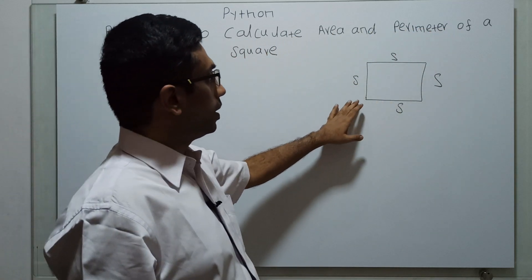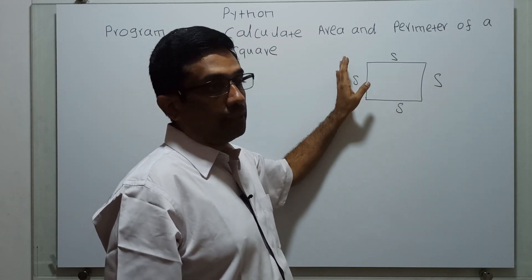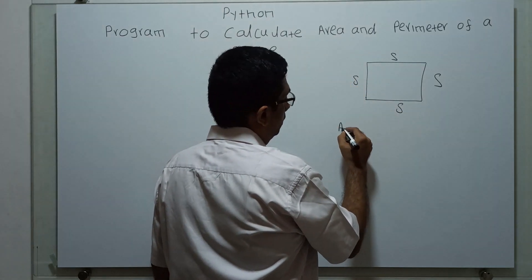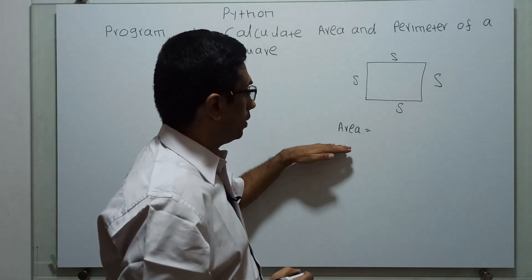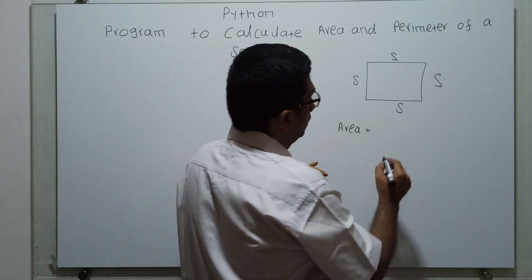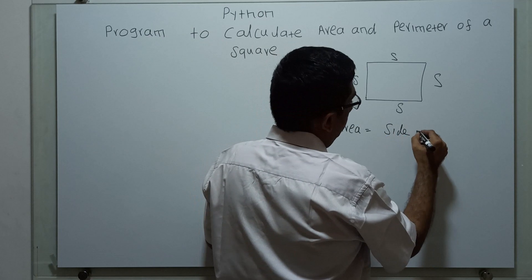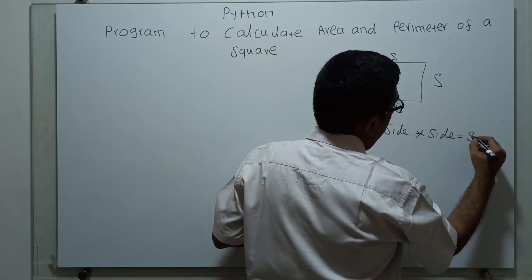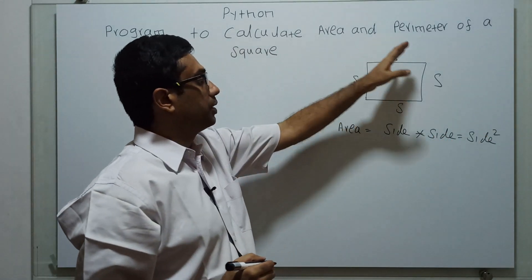This is a square which contains four sides. The four sides are equal. The formula to calculate area is side into side, that is equal to side square. S stands for side.